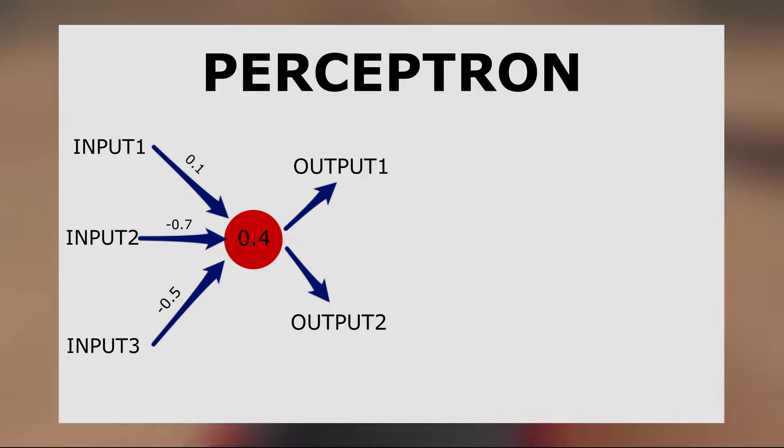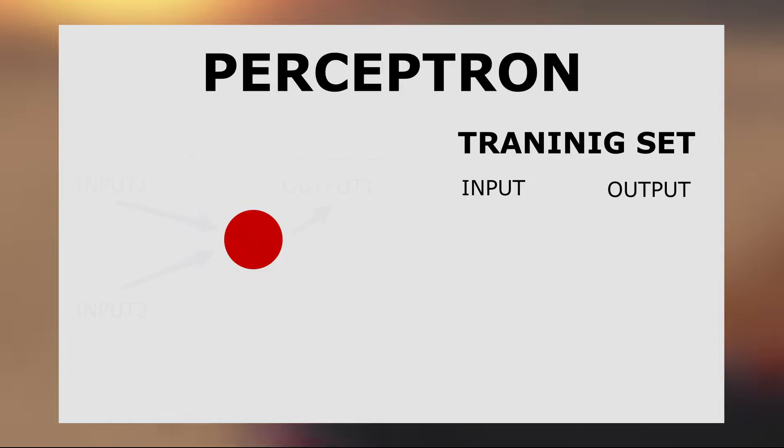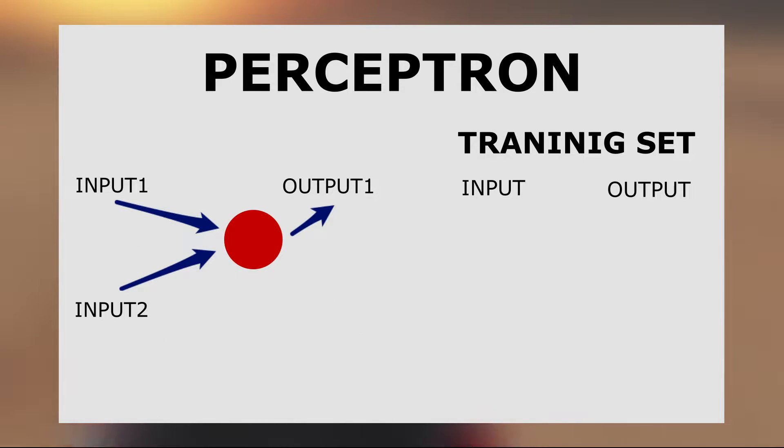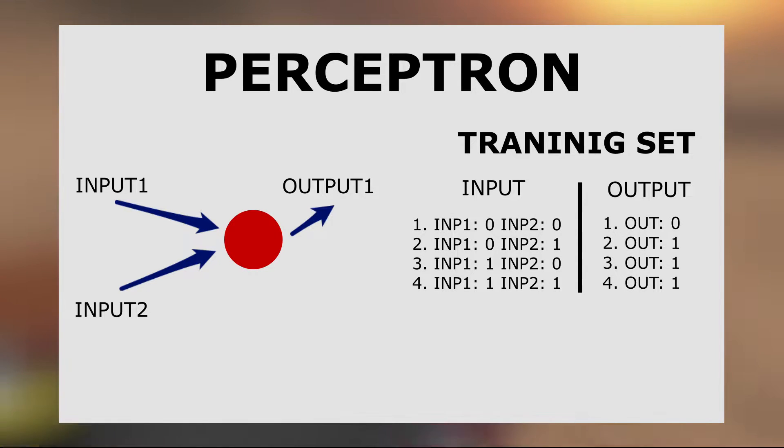The next step is to feed our network with a training set. A training set consists of collection of inputs and desired outputs. Let's take for example the OR statement and feed the Perceptron with this training set. The Perceptron will start its first iteration.